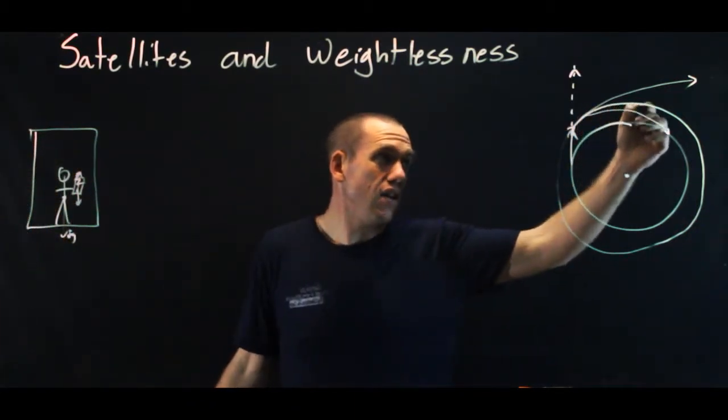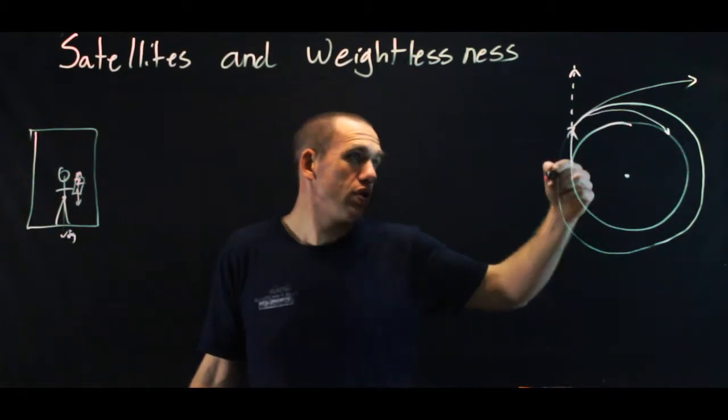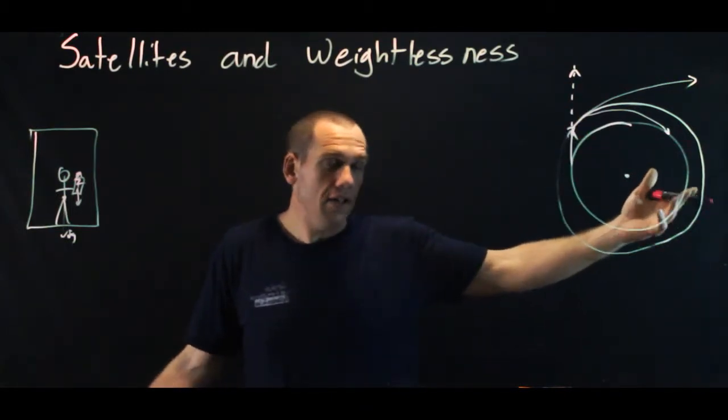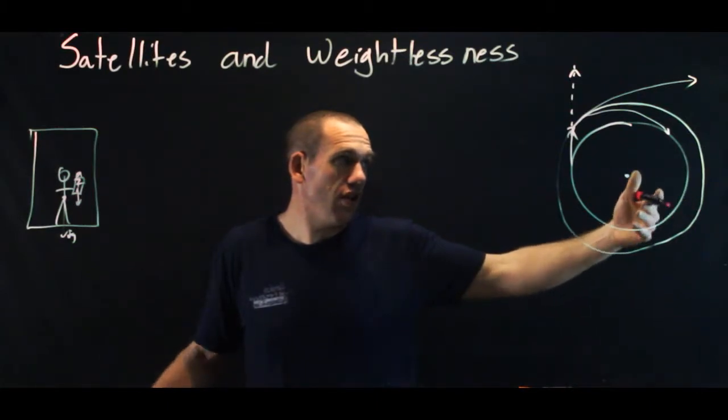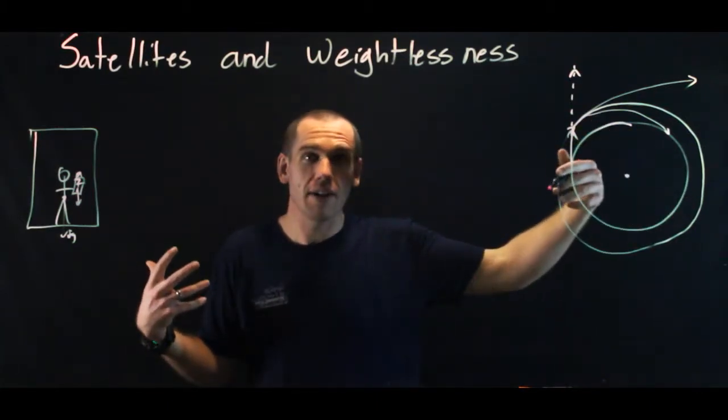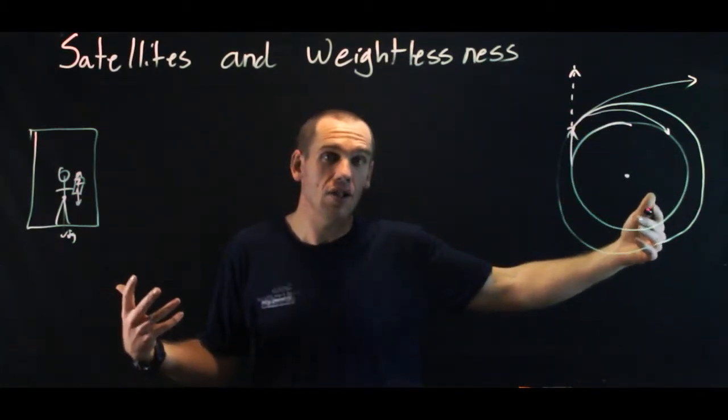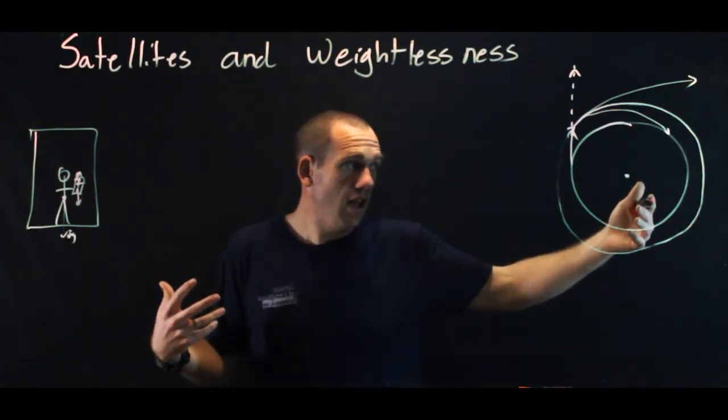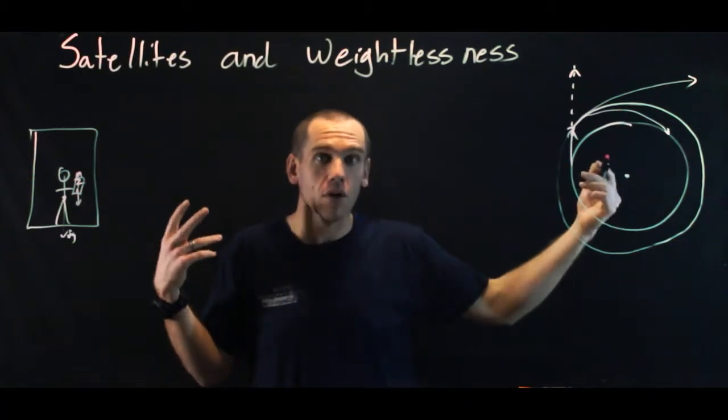Same thing is going on over here. This thing is accelerating towards Earth at the same rate of g, and so its centripetal acceleration makes things appear weightless. So astronauts, when they're floating around in the International Space Station, it's not that they have no weight, it's just that they are falling at g, and so they appear weightless.